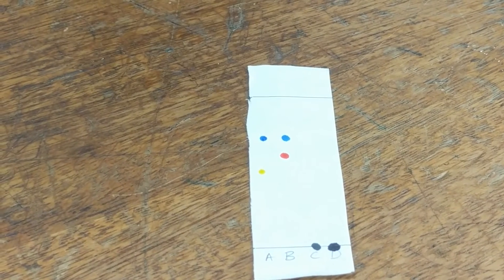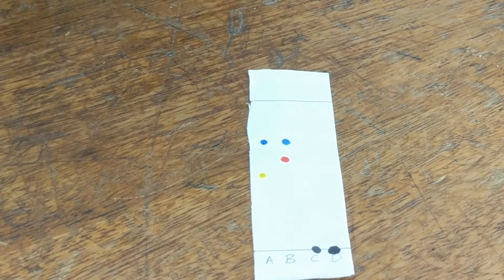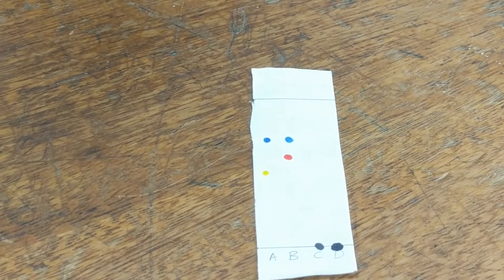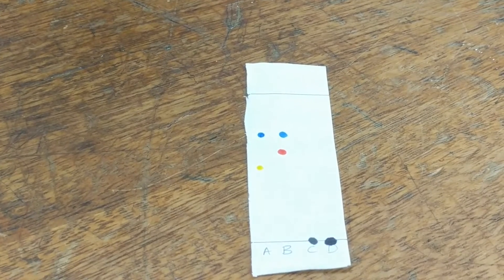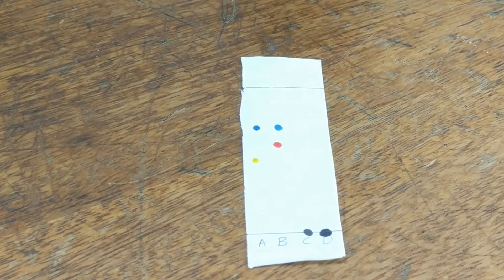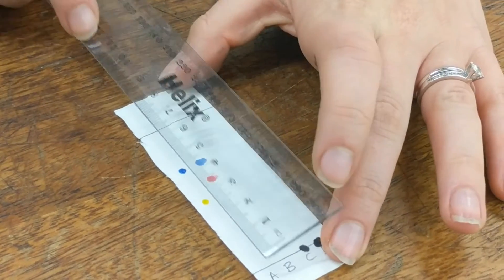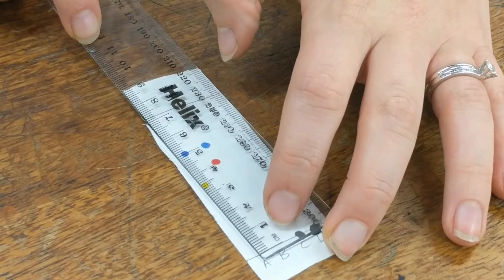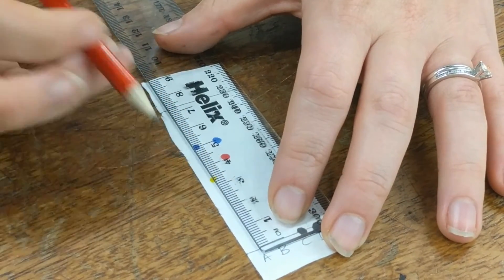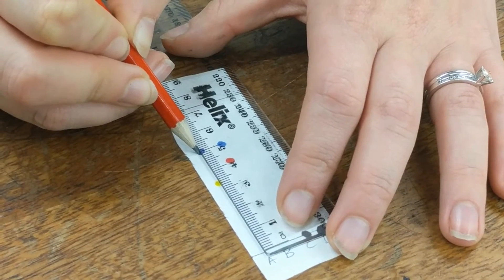Now, although we're saying that they're about the same height, the same colour, there is a much more accurate way of doing this. And that's by calculating something called the RF value. Now, to do this, we need to measure the distance from the bottom line. And I'm going to look at the blue spot. From the bottom line to the middle of the spot, which is looking at 5 centimetres there.